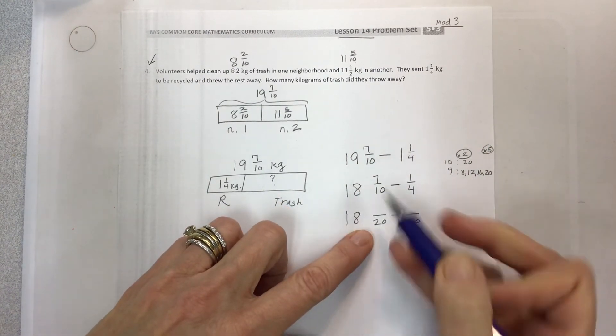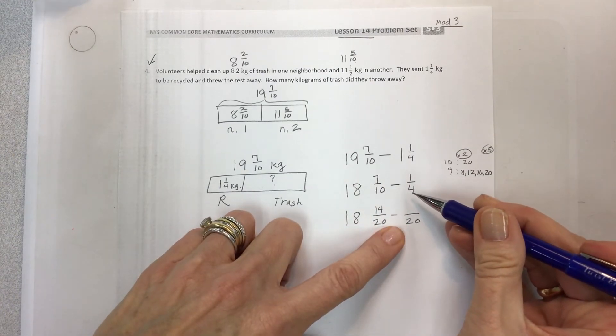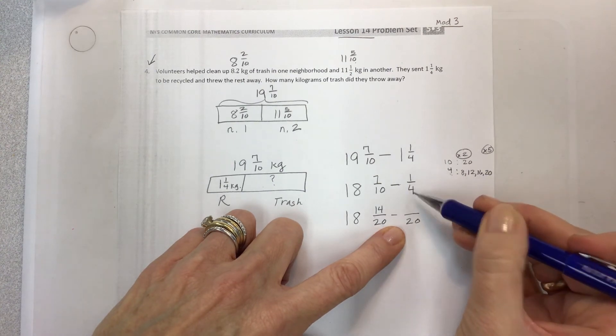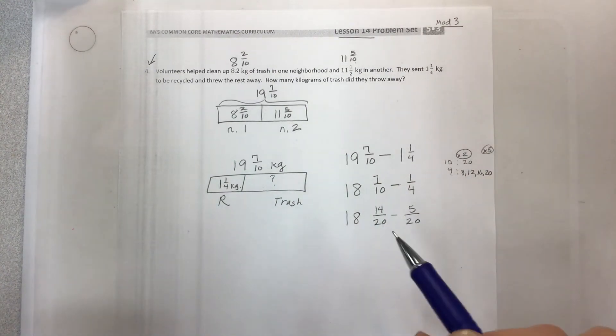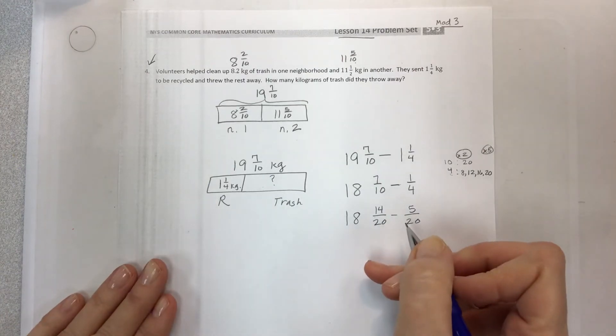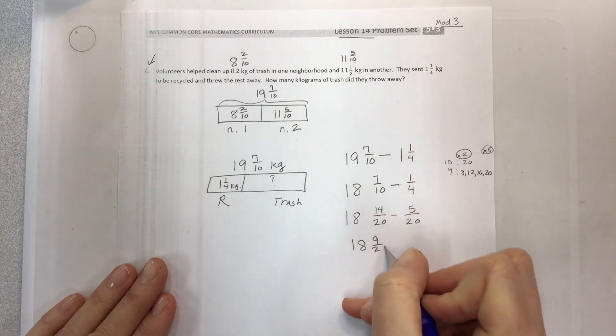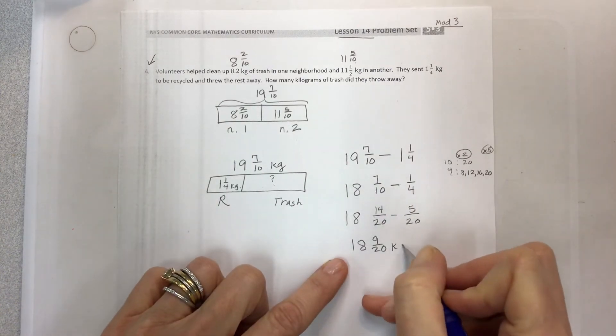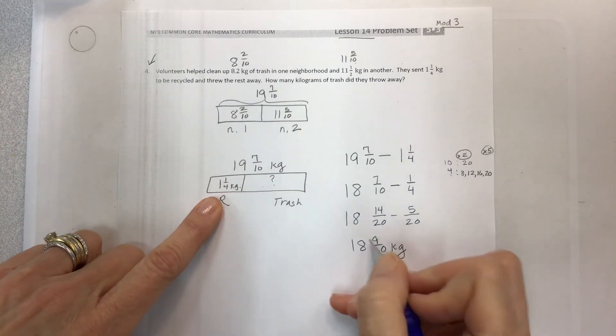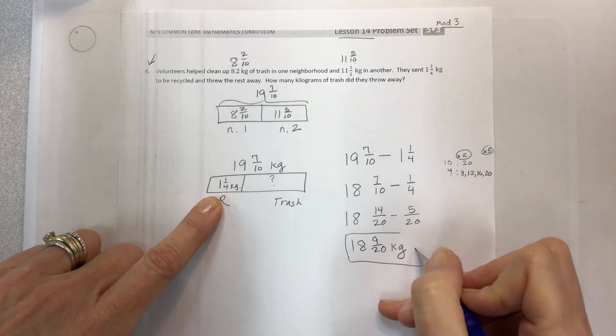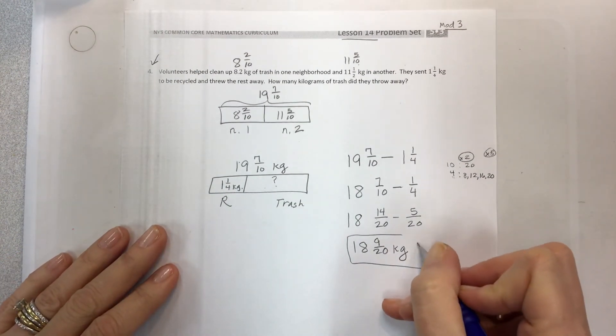So to get from 10 to 20, that's a scale factor of 2. 2 times 7 is 14. If I have a scale factor of 5 for 4, 4 times 5. And taking your 14 minus 5 and you get your 9. 18 and 9 twentieths kilograms is the difference between the 19 and 7 tenths and 1 and 1 fourth. And so that is the amount of trash. It became trash.